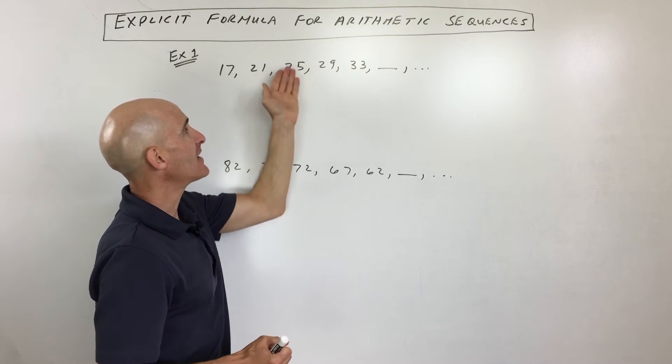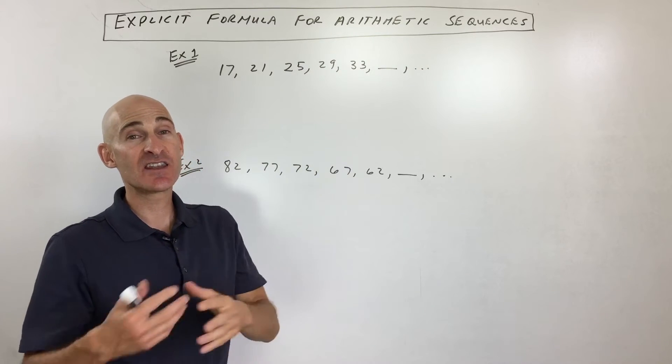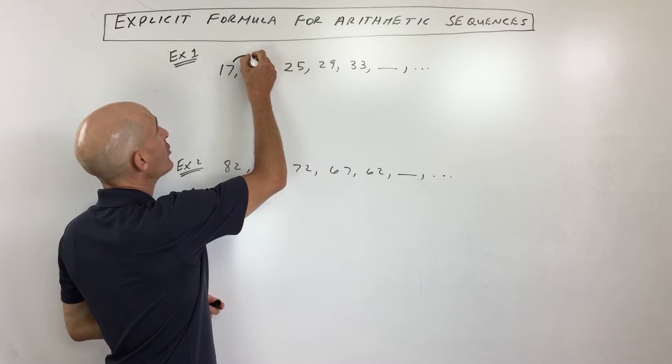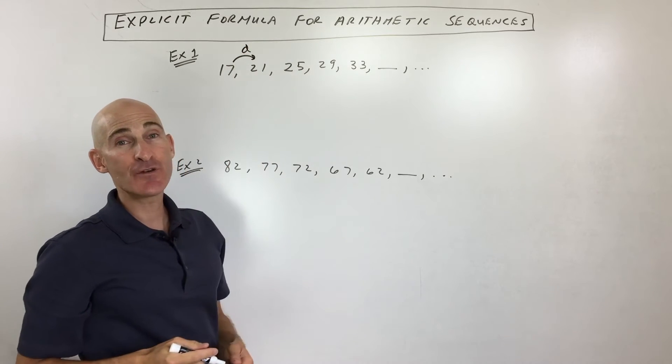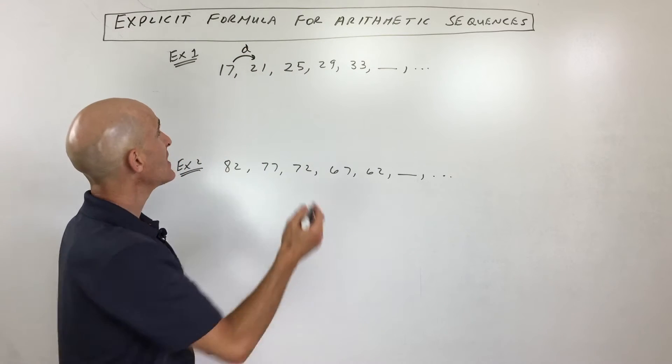Now, arithmetic means that you're adding the same thing to get to the next term. And that thing that you're adding is what's called d, the common difference. Now, why do they call it the common difference? Difference means subtract.